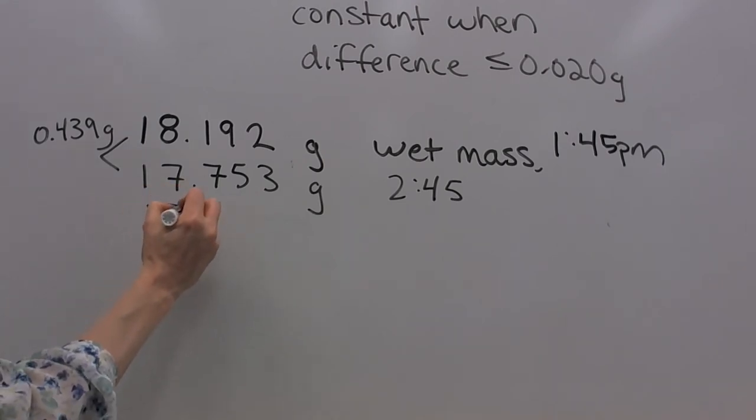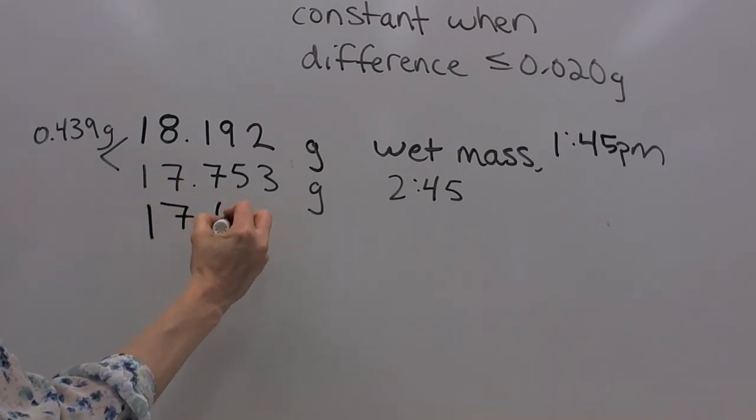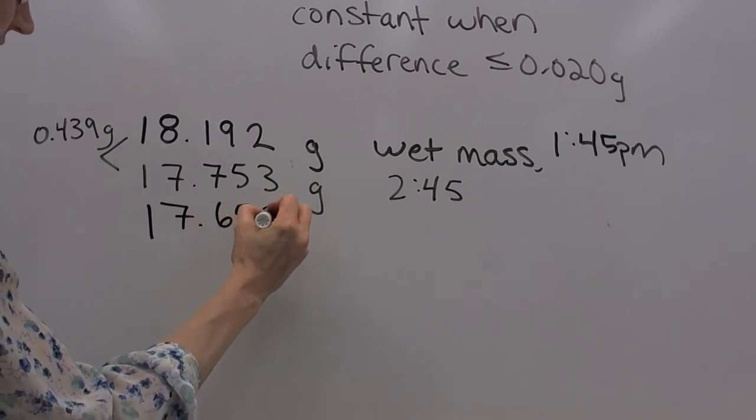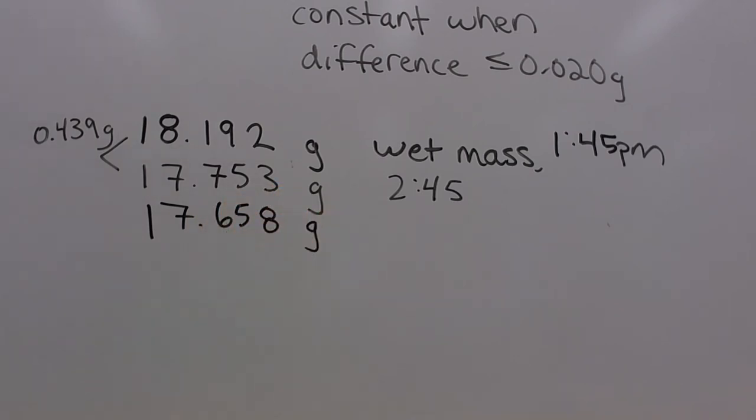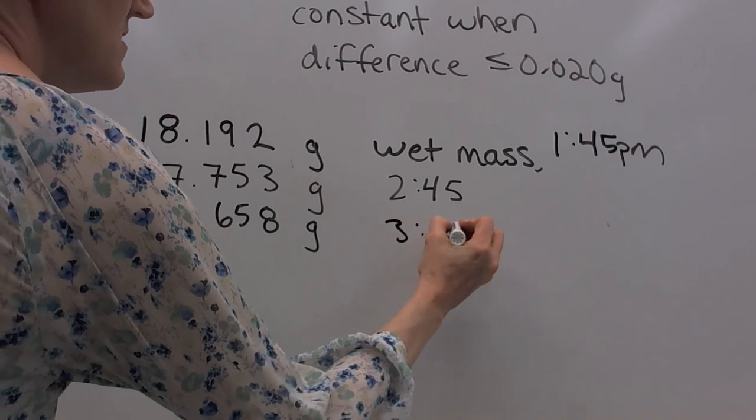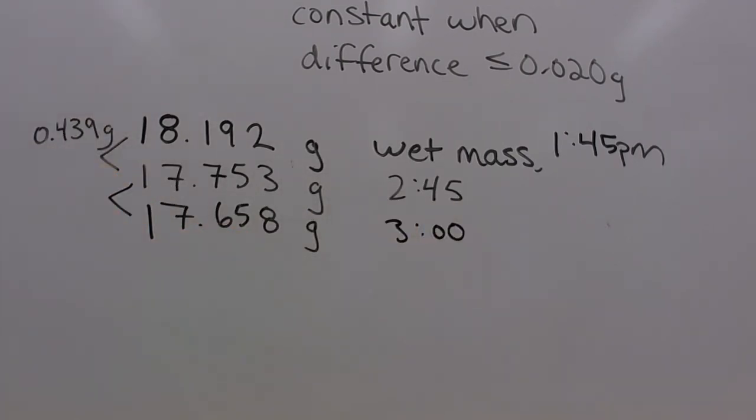the new mass off the balance, which I'll spare you looking at obtaining or measuring, was 17.658 grams, so much closer to the second one than we were after the first drying process. But we need to check to see just how close. So if you do this math, the difference between mass number 2 and 3 is now 0.095 grams. So much closer, but still, that's greater than the threshold of the difference being less than or equal to 0.020 grams.